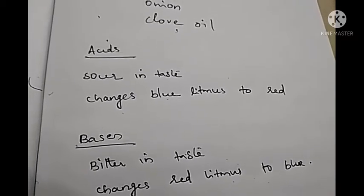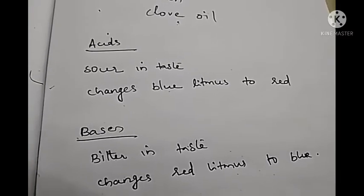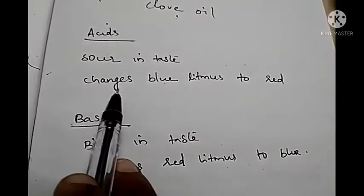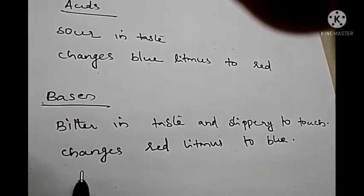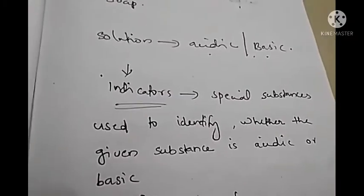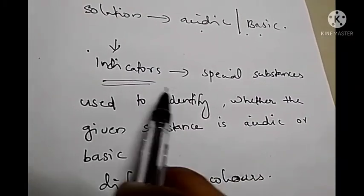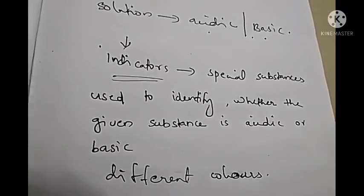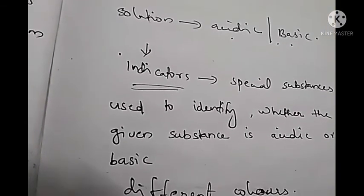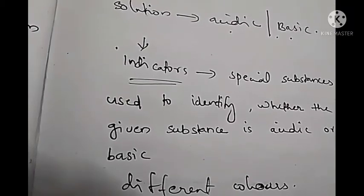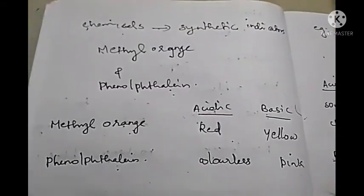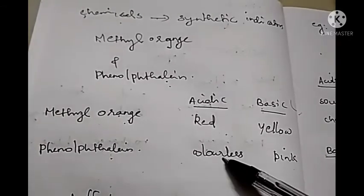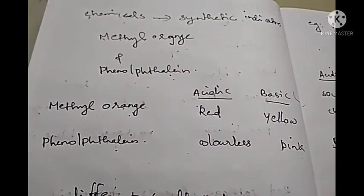Let me remind you what we have studied today. First, acids: they are sour in taste and they can change blue litmus paper to red. Bases are bitter in taste and slippery to touch, and they can change red litmus paper to blue. To identify whether a substance is acidic or basic, we use indicators. Examples of indicators are litmus, red cabbage leaves, hibiscus, turmeric, etc. — these are natural indicators. The two synthetic indicators we studied are methyl orange and phenolphthalein. Methyl orange gives red in acidic medium and yellow in basic medium. Phenolphthalein is colorless in acidic medium and gives a pink color in basic medium. The next topic we can discuss in the next video.